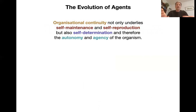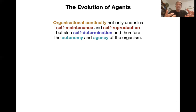To summarize: organizational continuity not only underlies self-maintenance and self-reproduction, but also — going back to when I introduced this account — it underlies self-determination. You get both at the same time from the same account, from the same type of organization. Therefore you also get autonomy and agency of the organism. As soon as you get an autonomous organism at the origin of life, you get an organism that has self-maintenance, self-reproduction, self-determination, autonomy, and agency.